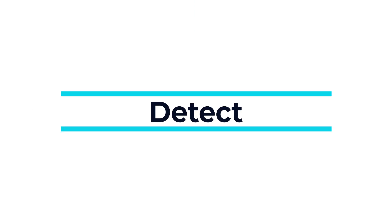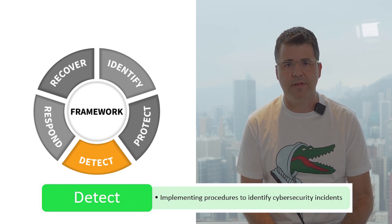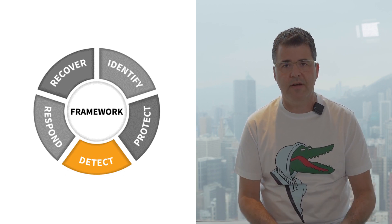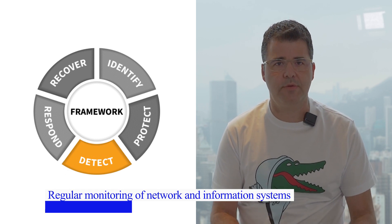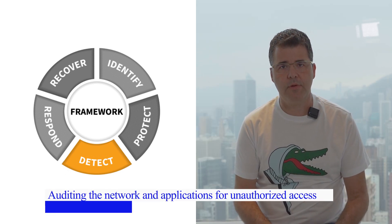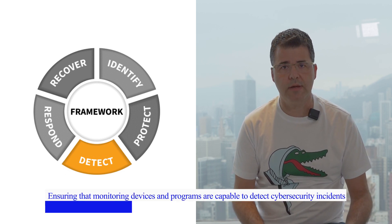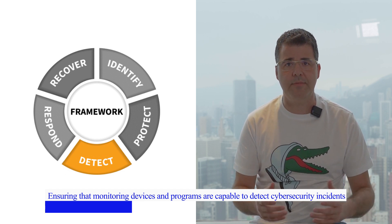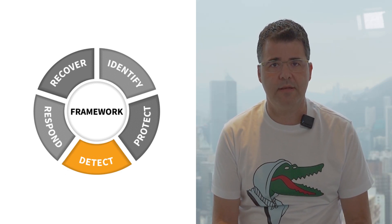The third function is Detect. This function is related to the activities which are used to identify cybersecurity incidents in a timely manner. Key activities of the Detect function include: regular monitoring of network and information systems to trace anomalous activities and their potential impact; auditing the network and applications for unauthorized access; and ensuring that monitoring devices and programs are capable of detecting cybersecurity incidents and that protective measures are effective to mitigate cyber breaches.